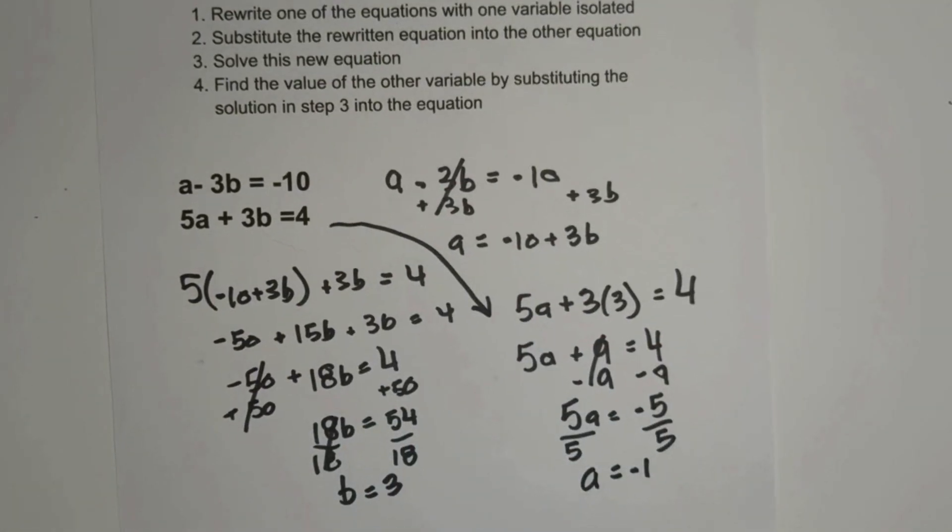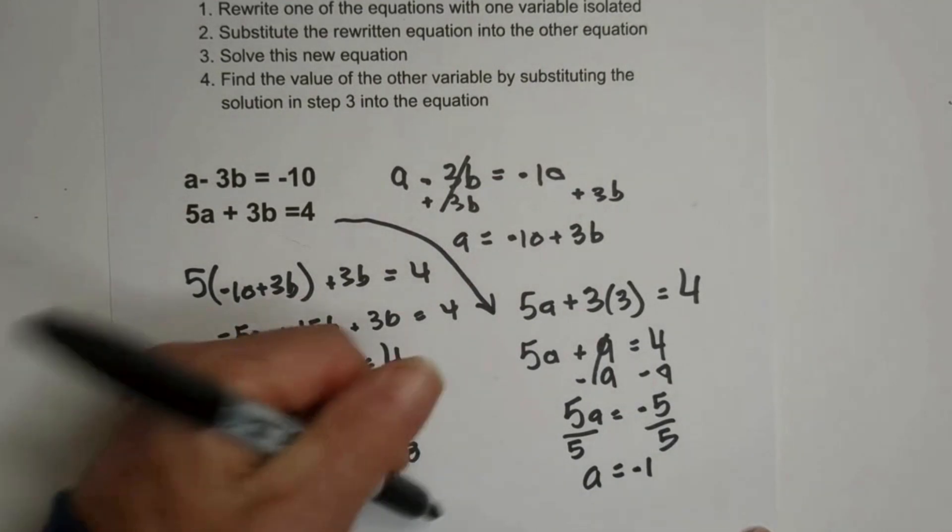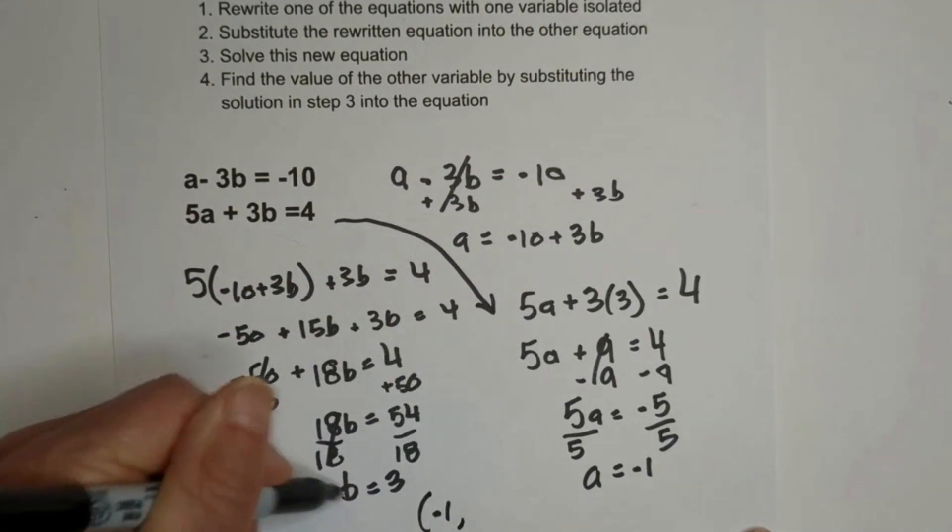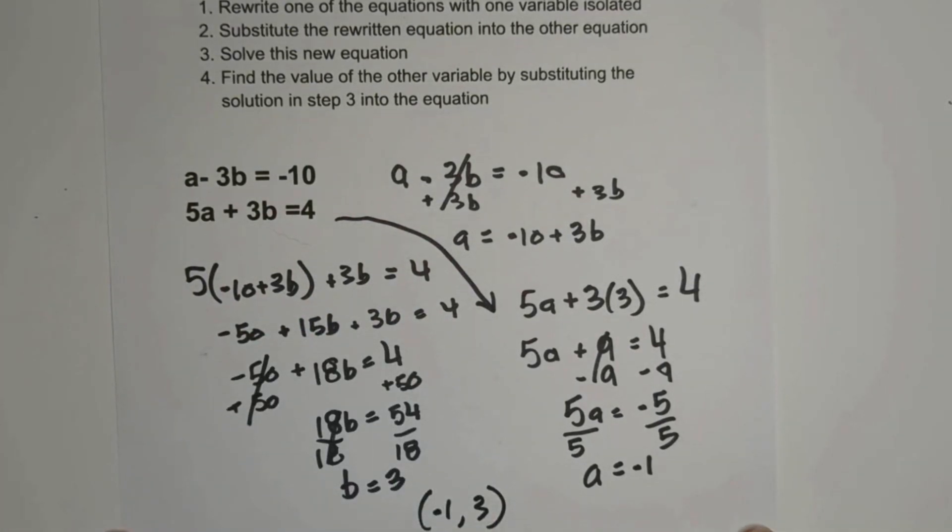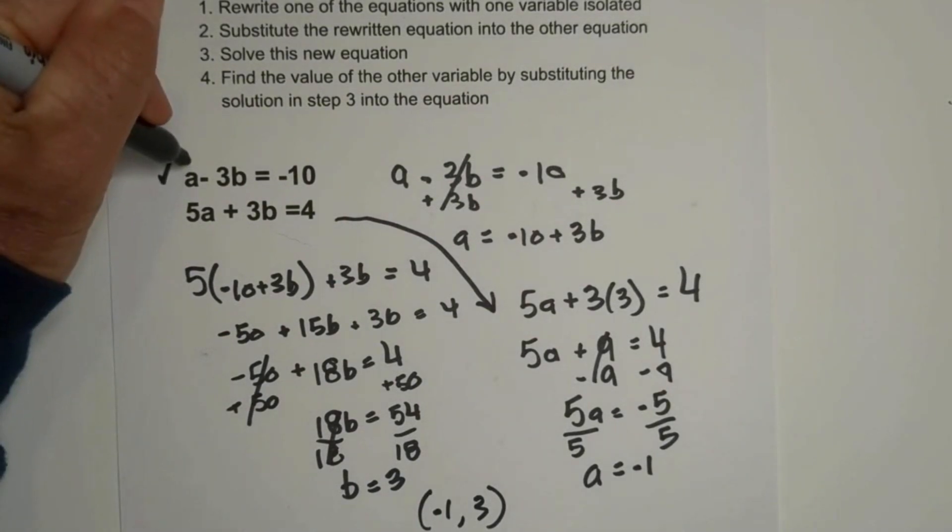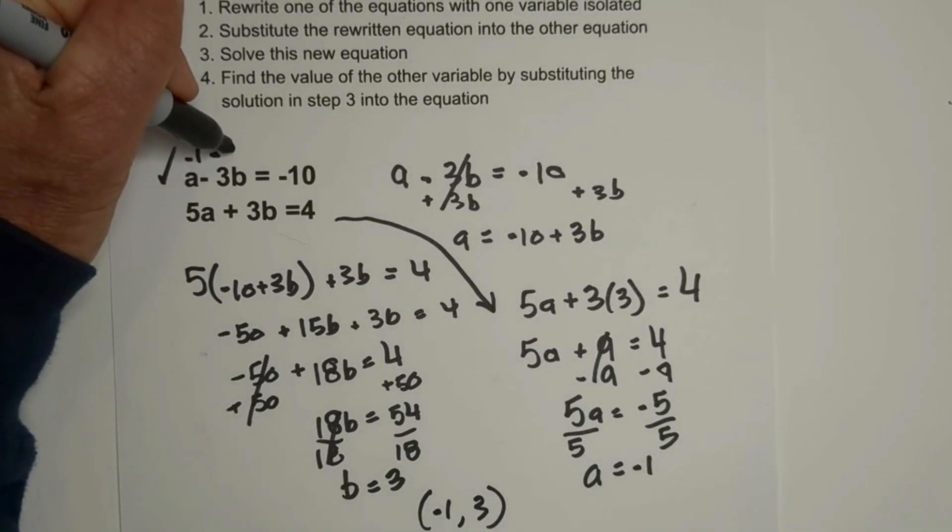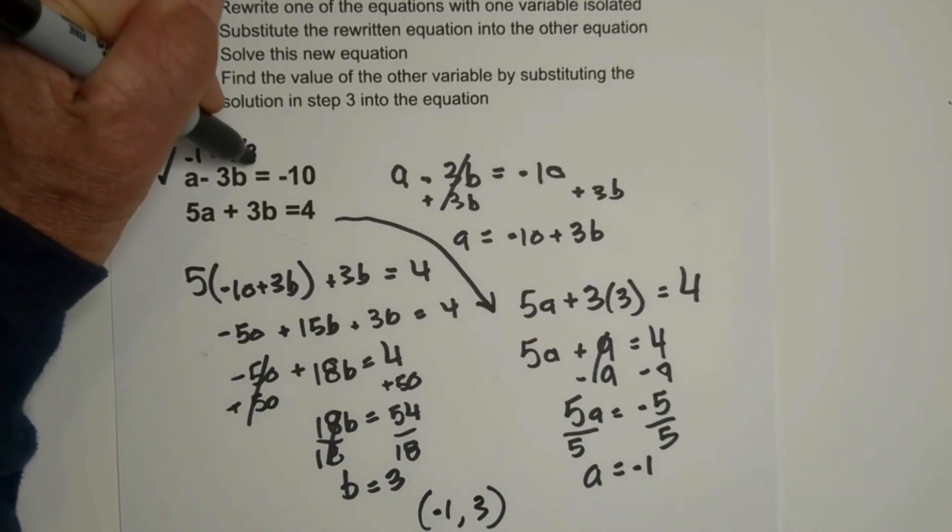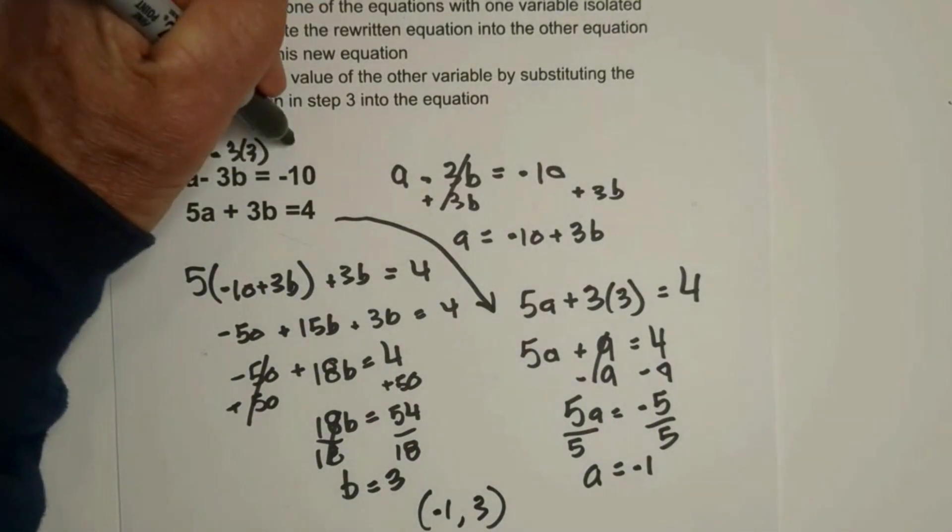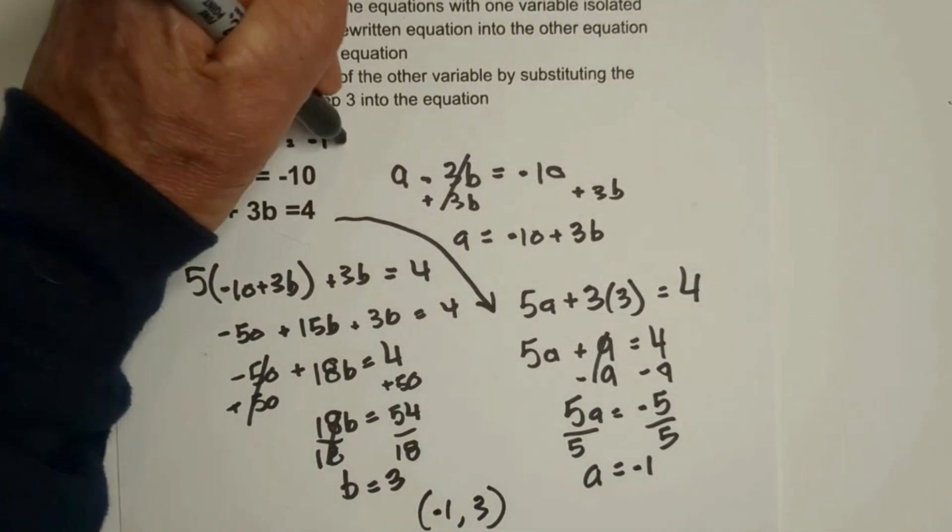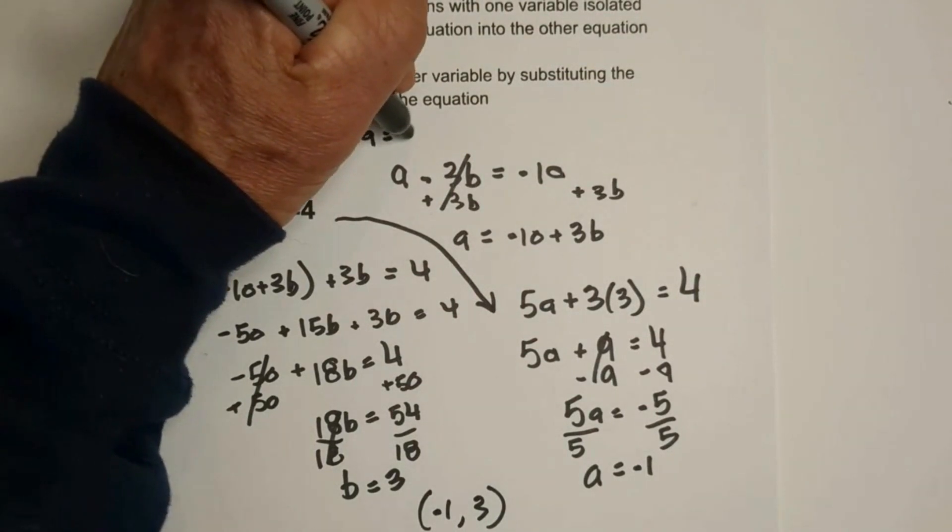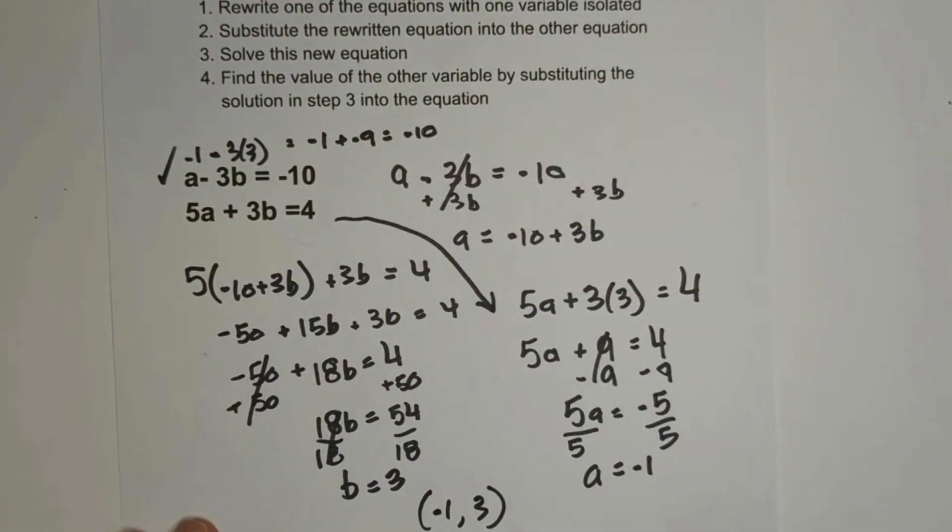So now I have my solution set. I have A is negative 1 and B is 3. Now the last thing, let's just go through and check our work. So the A now is negative 1. And we're going to subtract 3 times B, which is negative 3. Negative 3 times 3 equals negative 9. So we have negative 1 plus negative 9 equals negative 10. So the solution works out.